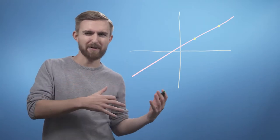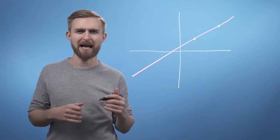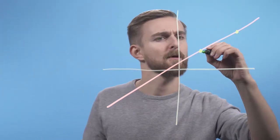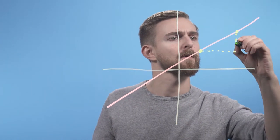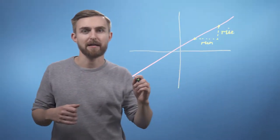Where rise is the increase in the vertical direction, and run is the distance along the horizontal axis. So, rise here and run down here.